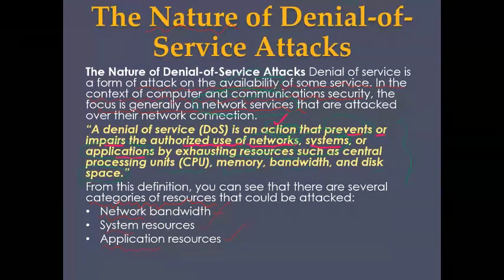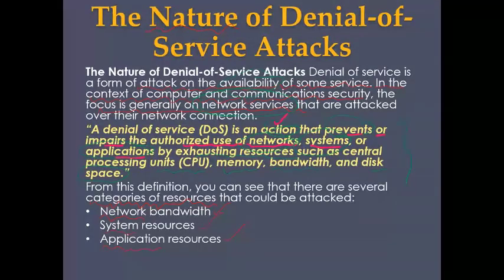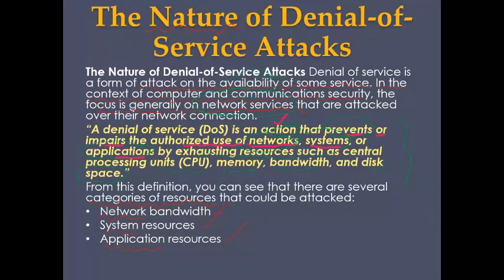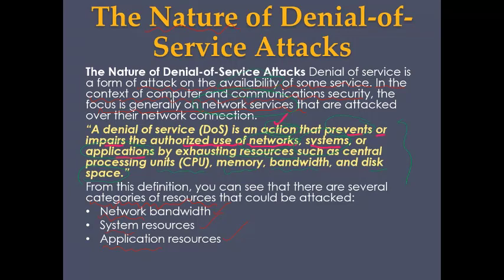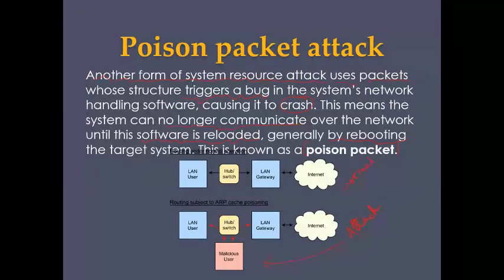There are three main categories of resources that are primarily attacked by attackers. Number one is the network — specifically network bandwidth. Number two is system resources. Number three is the application. These three — network bandwidth, system resources, and application — are the prime resources that are attacked.